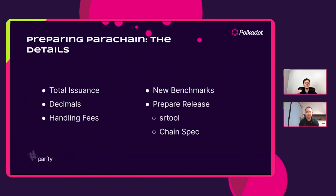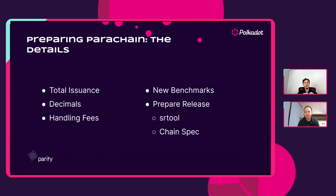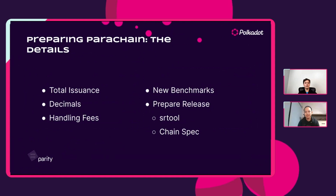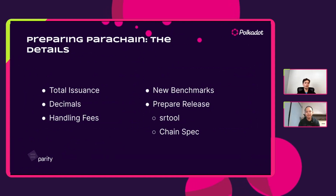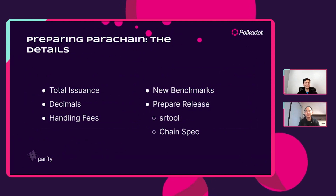Lastly, there is the chain spec that you need to prepare. The chain spec is an important piece that provides things like what are the boot nodes — when a new collator is onboarding, what nodes should they connect to in order to talk to the rest of the network. It also contains the genesis state of your chain. This genesis state has to be agreed on by every single collator using it, so usually you share this chain spec to all collators and they all must agree on this genesis state.